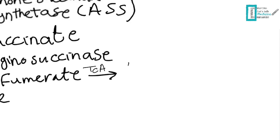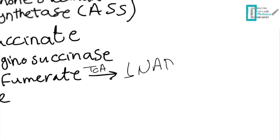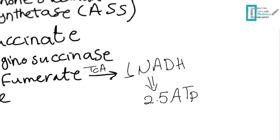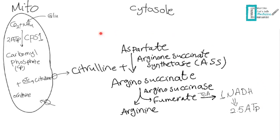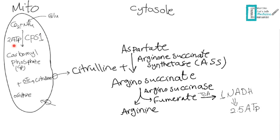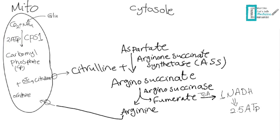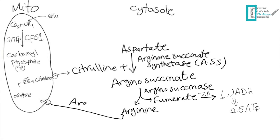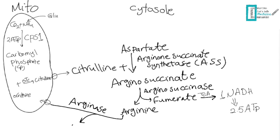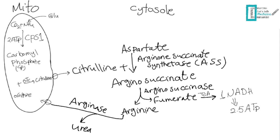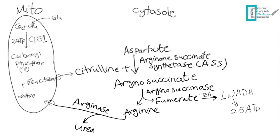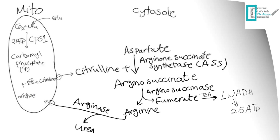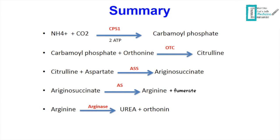The fumarate enters the TCA cycle and yields one NADH, which equals approximately 2.5 ATP. This ATP is used in the first step to start the urea cycle, since we need energy to begin. Arginine is then acted upon by an enzyme called arginase, giving us urea and ornithine. The ornithine is transported back into the mitochondria matrix to complete the second step of the urea cycle.